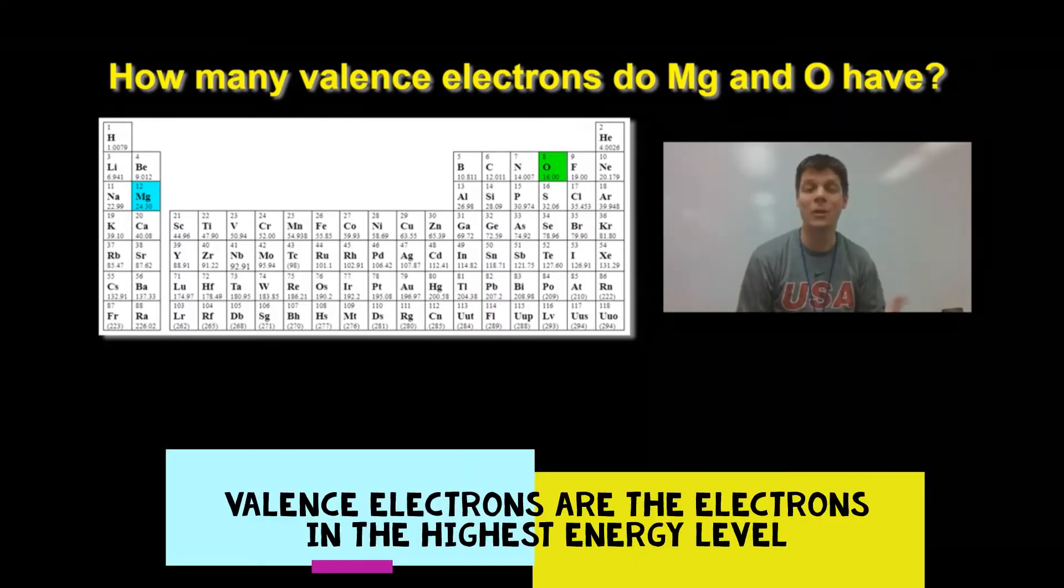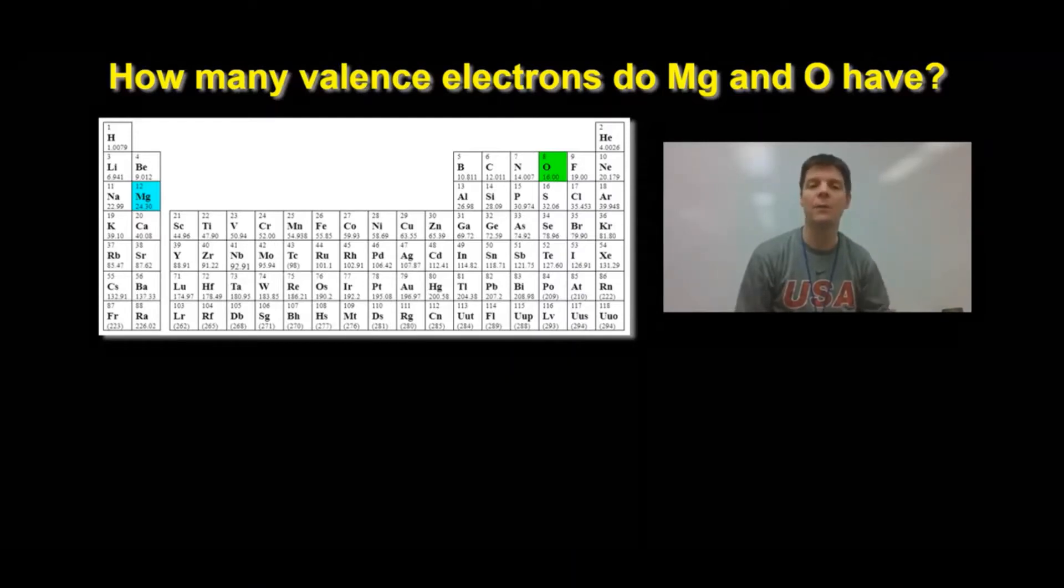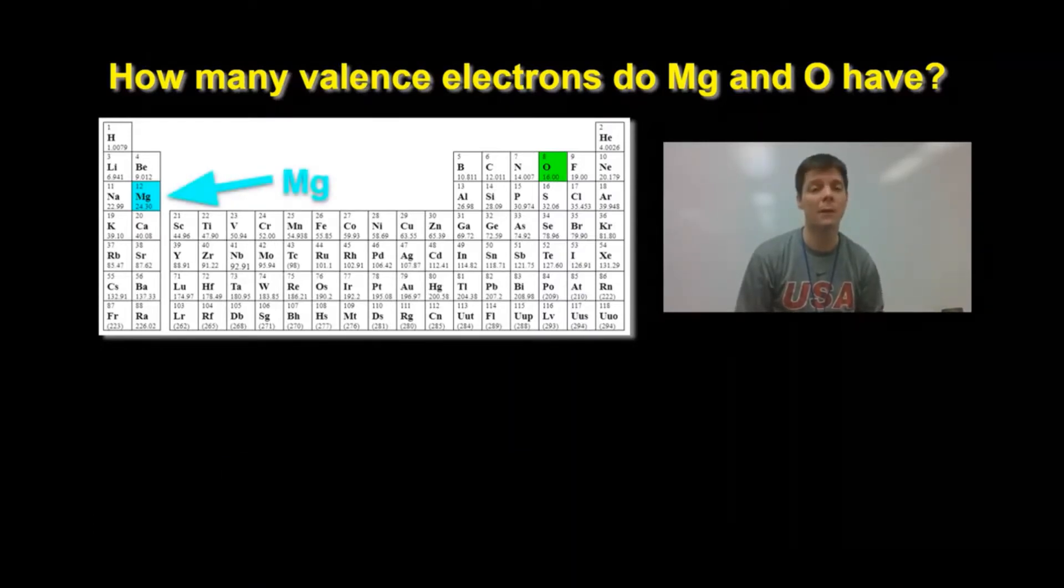Okay, if you want to understand a reaction like the one you just saw, you need to know about valence electrons. These are the electrons in the highest energy level for an atom. Let's find magnesium and oxygen on the periodic table. First we find magnesium, its atomic number is 12. Then we find oxygen, its atomic number is 8.